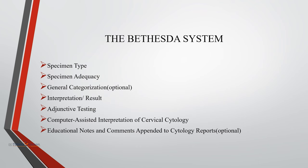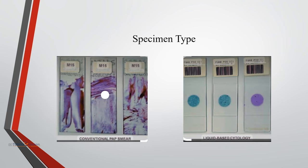The Bethesda system describes the following components: specimen type, specimen adequacy, general categorization, interpretation and results, adjunctive testing, computer-assisted interpretation of cervical cytology, and educational notes and comments appended to cytology reports. Cervical specimens or pap smears can be divided into two types: conventional pap smear and liquid-based cytology.